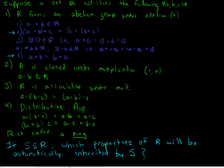This is the closure property. Let's draw a little diagram. Here's R, and S is some arbitrary subset inside R. In order for S to be closed, we'd have to take any two elements of S, add them together, and that resulting sum would still have to be in S. But if S is chosen at random, there's no guarantee that this element plus this element is still going to be in S — it could be somewhere out in R. So closure is not automatically inherited by an arbitrary subset.